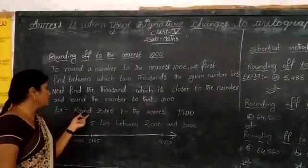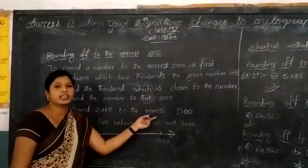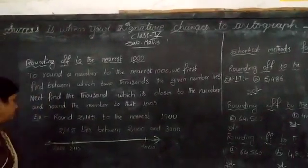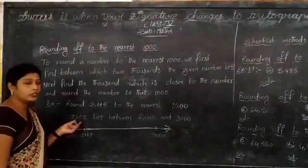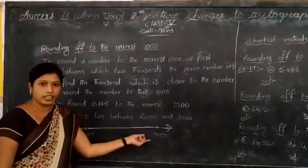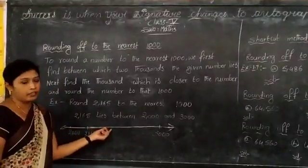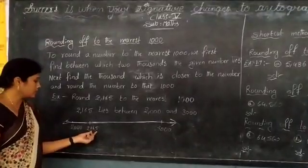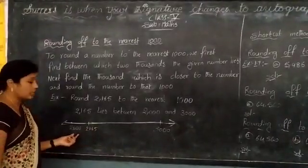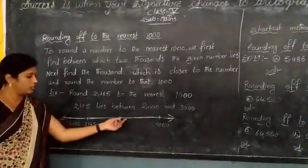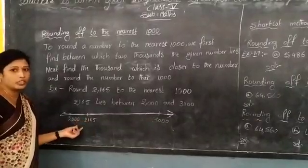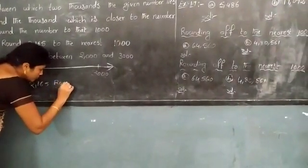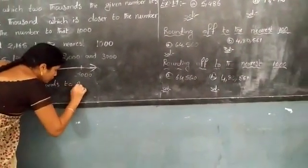For example, round 2165 to the nearest 1000. This number 2165 lies between 2000 and 3000. On the number line from 2000 to 3000, 2165 is closer to 2000. So 2165 rounds to 2000.